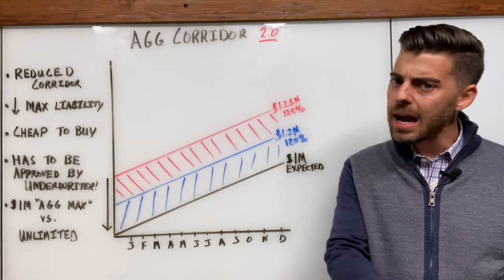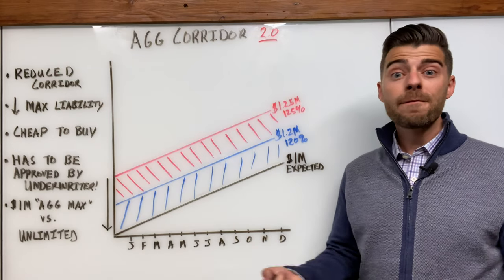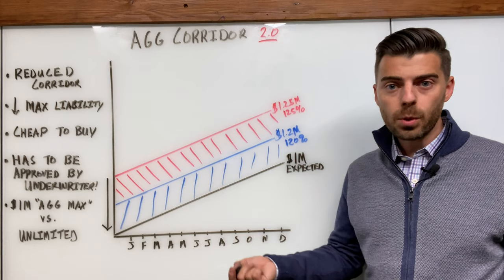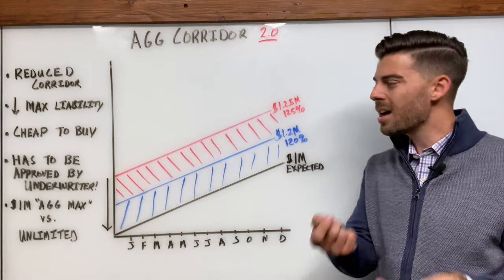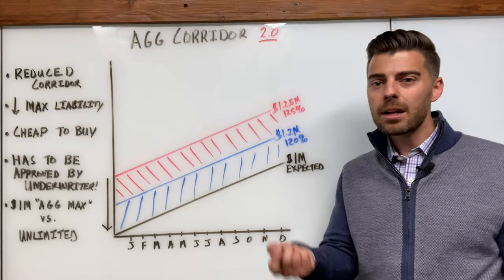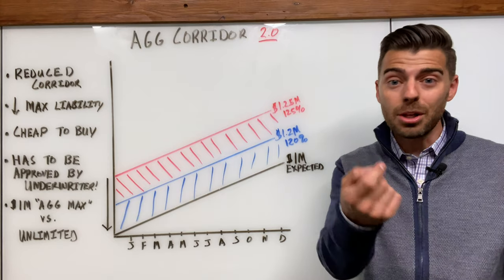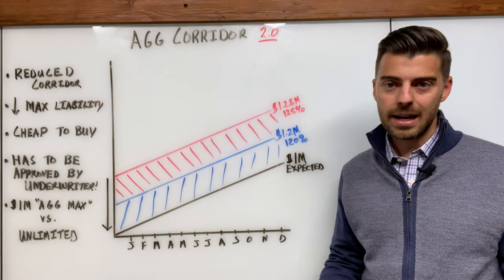They're probably not going to do this on a fully insured group that's running at 120% loss ratio with really no insight into the large claims. There's not a distinguishment between medical and Rx, and you're just like, hey, I'm trying to do anything because I don't know what I'm doing. They're probably not going to approve your 120% corridor in that instance.